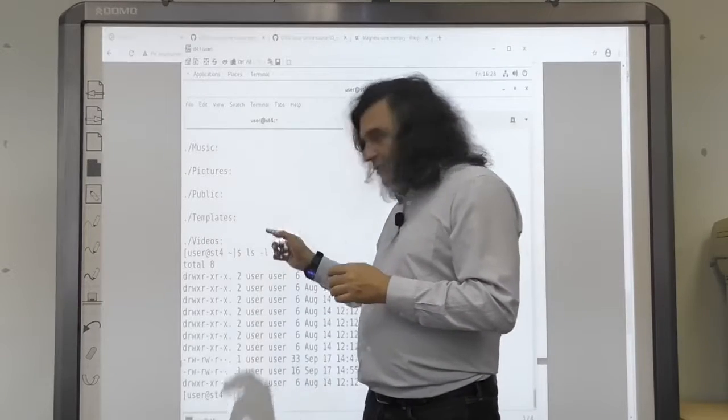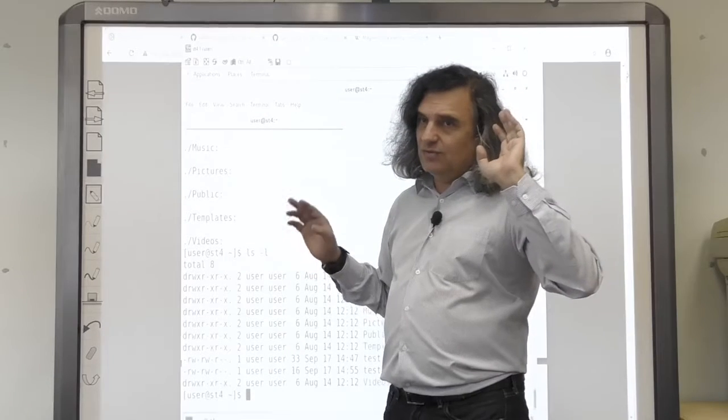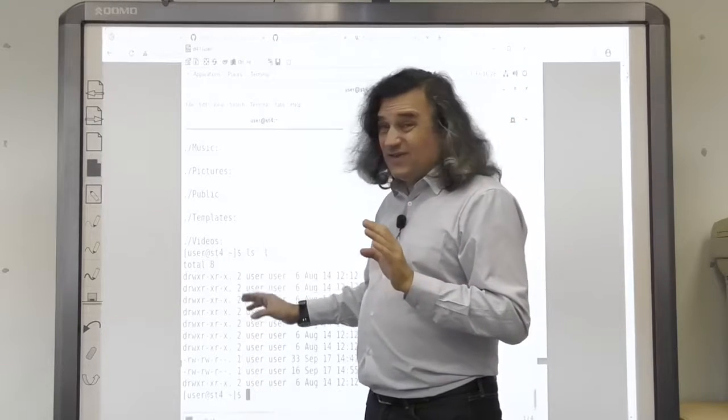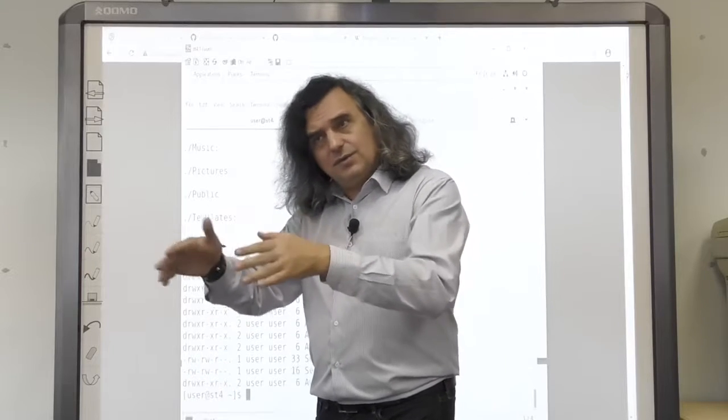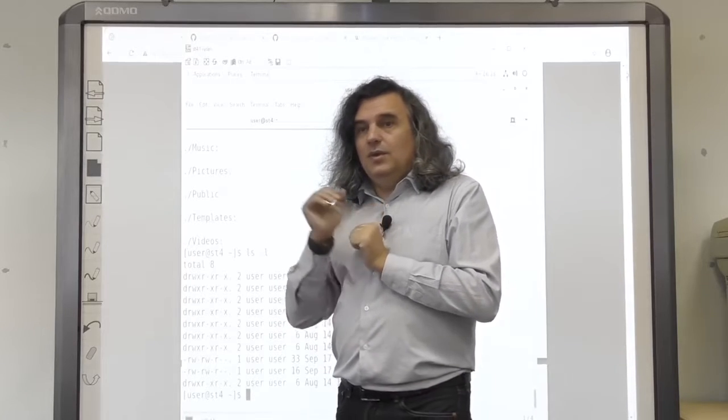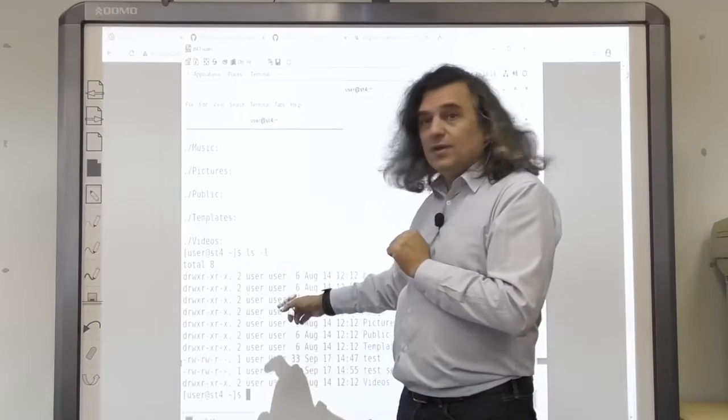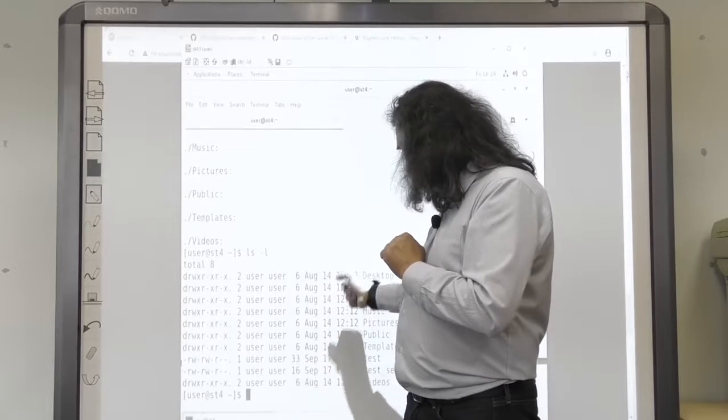The second column is a mystery for now - the file link counter, that we will discuss later in relation to links. Then we can see owner and owner group, and size of file.